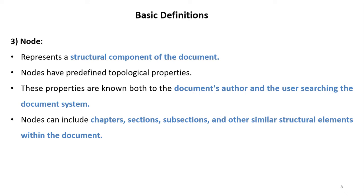Nodes have predefined topological properties that are known both to the document's author and to the user searching the system — otherwise it is not possible for the user to give a structural query. Nodes can include chapters, sections, subsections, and other similar structural elements within the document.